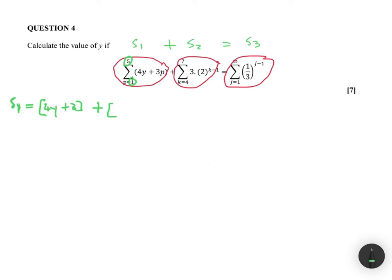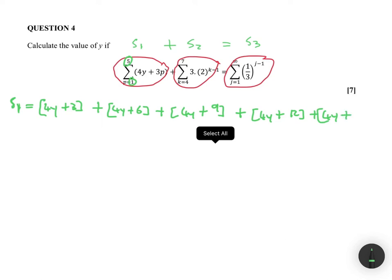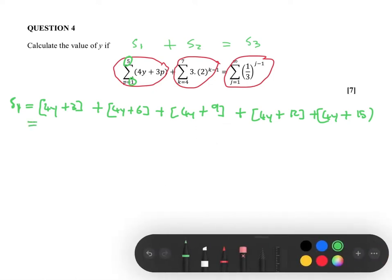Now I can add the second term, because for a sum you're adding the terms. When p equals two, we're going to have four y plus three multiplied by two, so four y plus six. Then plus four y plus three multiplied by three, which is nine. For the fourth term, four y plus three times four which is 12. Then plus four y plus three times five which is 15.